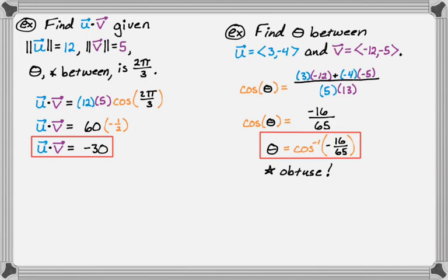That's how we derive the relationship between the dot product and the angle between vectors, and those are two examples of how you'll use it frequently. I hope you found this helpful — good luck.